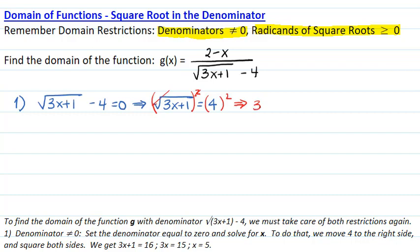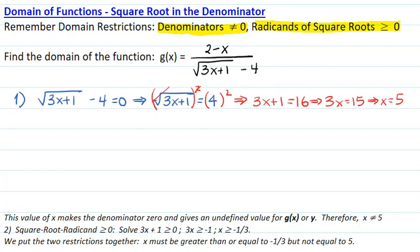I get the equation 3x plus 1 equals 16, or 3x equals 15, or x equals 5 if I divide by 3. But this value makes the denominator equal to zero and therefore it has to be excluded from the set of real numbers. That makes x not equal to 5.